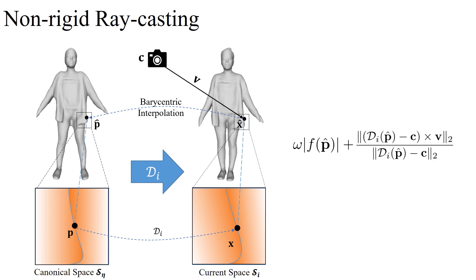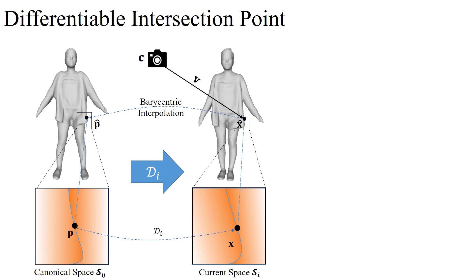Based on the good initialization, 10 times iterations can solve the optimization for most sampled rays. However, the iteratively solved intersection P is not differentiable relative to the learnable weights of MLPs. We need to derive its differentiable formulation.